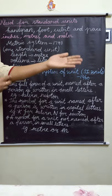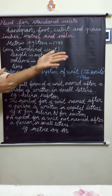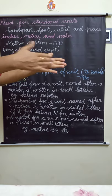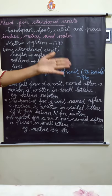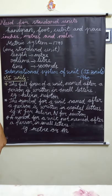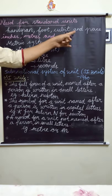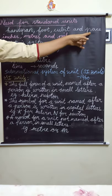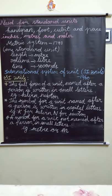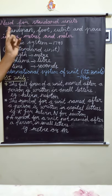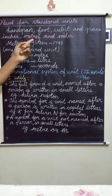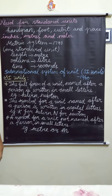Cubit is from elbow to fingers. Foot is the length of one leg. Pace means the distance from one leg to the next leg. These — handspan, foot, cubit and pace — are units based on different body parts, used for measuring length.